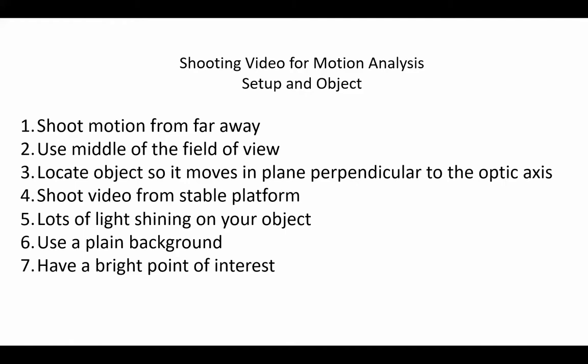Four, use the most stable platform for shooting as possible. Use a tripod if available and avoid handheld recording devices. Five, shoot in an environment with as much light as possible. This will minimize motion blur and make it easier to find the point of interest for your object. If possible, shoot outside because the sun will provide a lot of light. A slightly cloudy day will work best to minimize shadows.